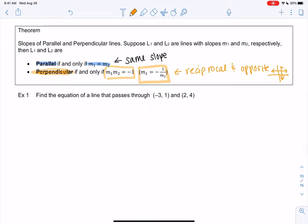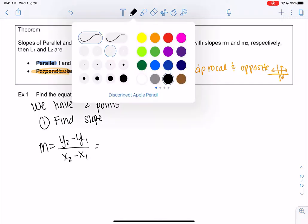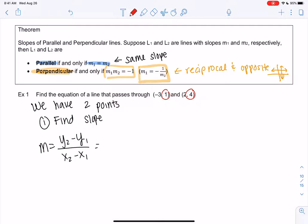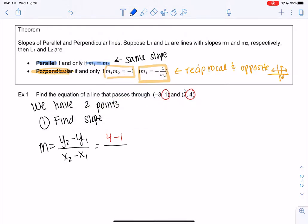So we want to find the equation of a line that passes through two points: negative 3,1 and 2,4. So if we have two points, step one is to find the slope. So m equals y2 minus y1 over x2 minus x1. So y2 will be 4 and y1 will be 1. Basically, the difference in the y's divided by x2. Notice if y2 is 4, then x2 is 2. These are coming from the same point. And then x1 will be negative 3, so minus negative 3. So we'll get 3 on top. We'll get 5 on bottom. So m is 3 fifths.